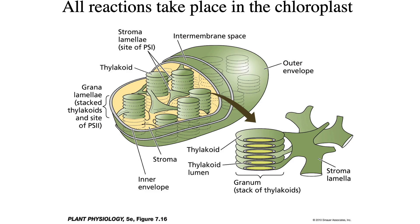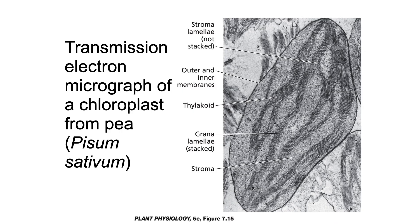Within the thylakoid itself, there is a thylakoid lumen — an interior space inside the thylakoid membranes. Much of the photosynthetic enzymes and proteins involved in electron transport are embedded in the thylakoid membranes, and many enzymes involved in the carbon reactions are located in the stroma. Here's an actual transmission electron micrograph of a chloroplast showing its structure. We can see the thylakoid membranes tightly stacked, surrounded by the stroma, which is then surrounded by the outer and inner membranes — which are so close together they look like a single membrane.